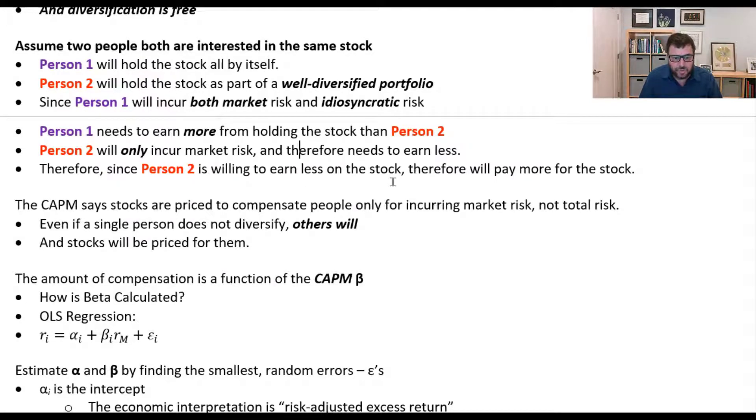And so the stock's price will reflect the most that people are willing to pay. It will reflect person two's price, not person one's price. And so stocks will be priced for people who are willing to hold stocks as part of a well-diversified portfolio.